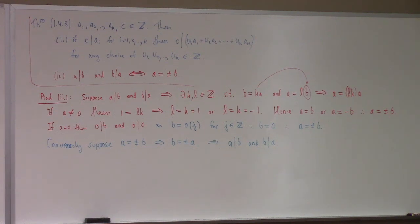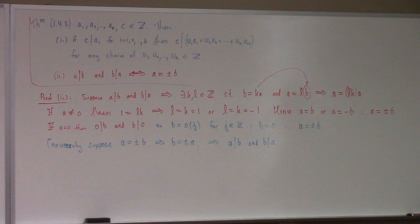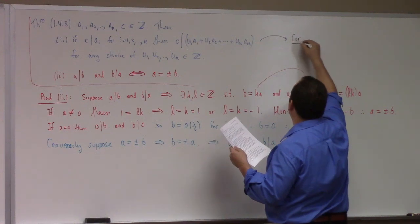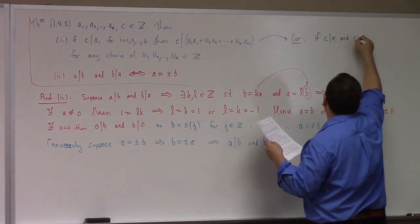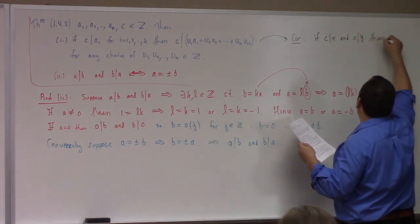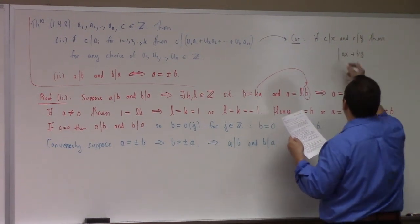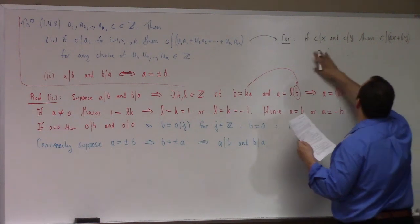You could write more, but that's it. The most important case is really the case of two things. A simple corollary: if c divides x and c divides y, then c divides a·x plus b·y. So c divides a·x plus b·y.